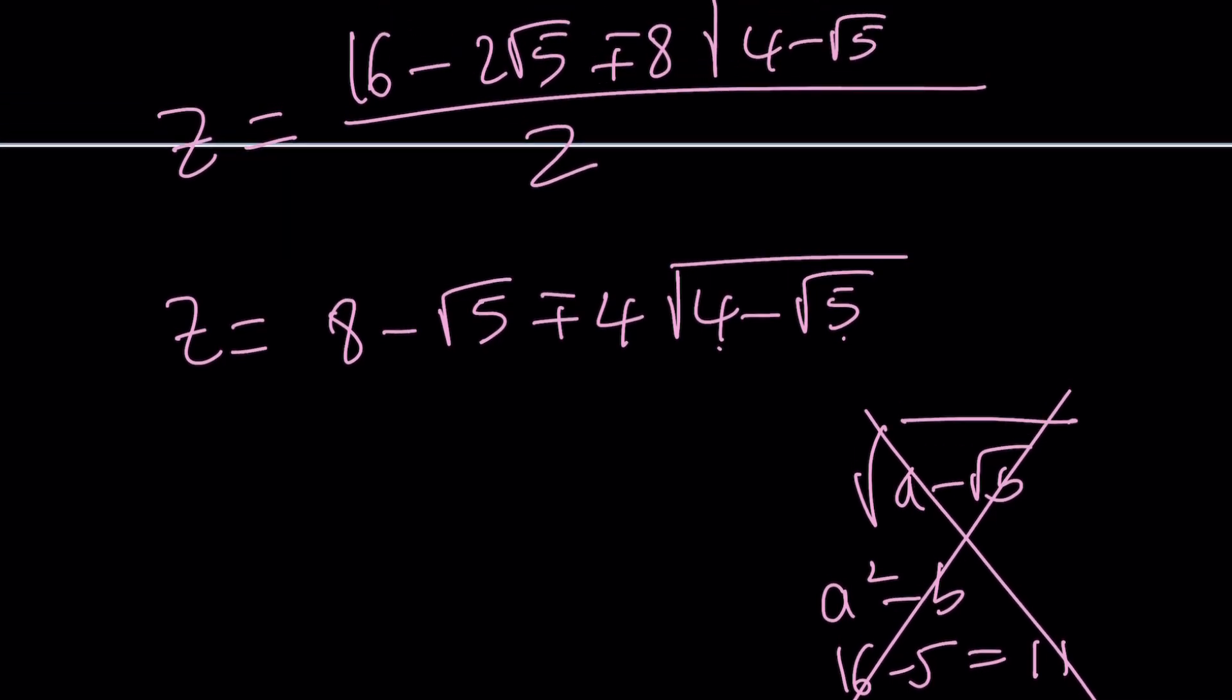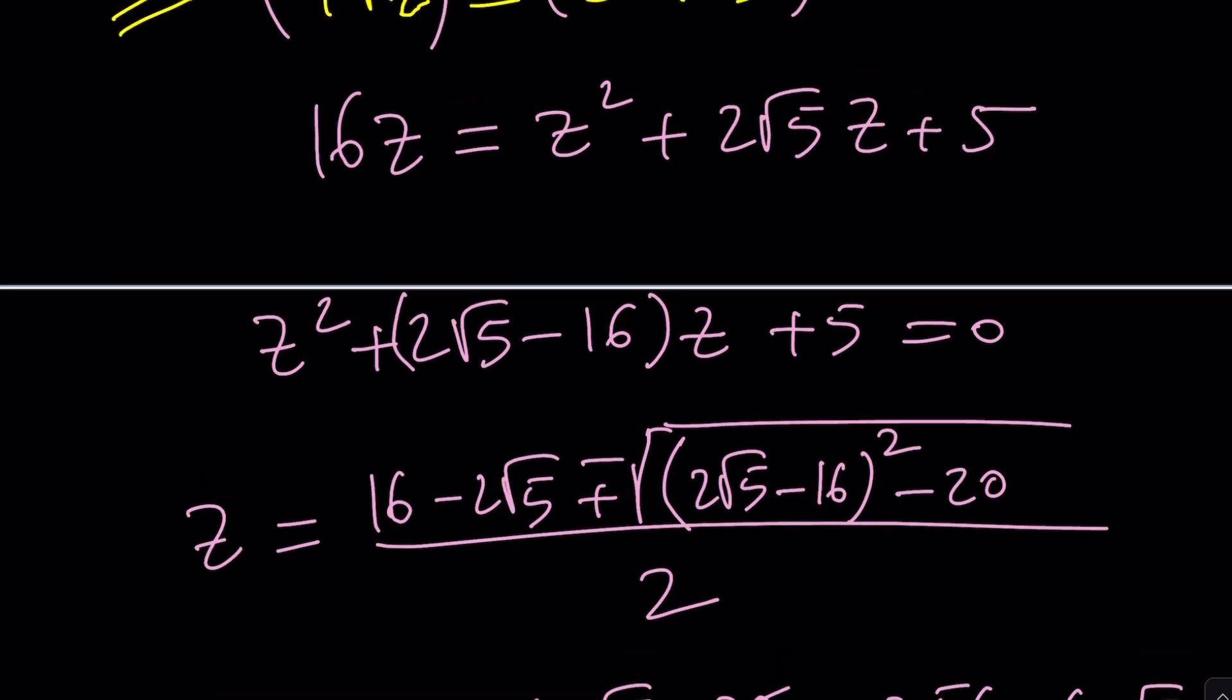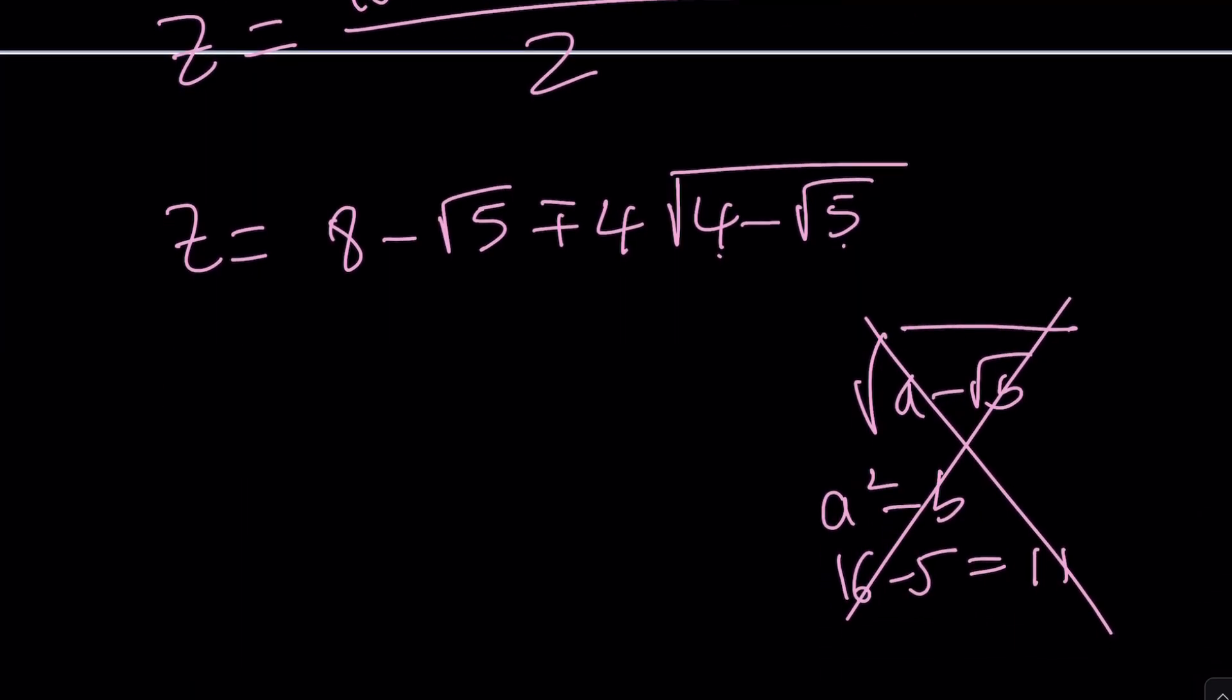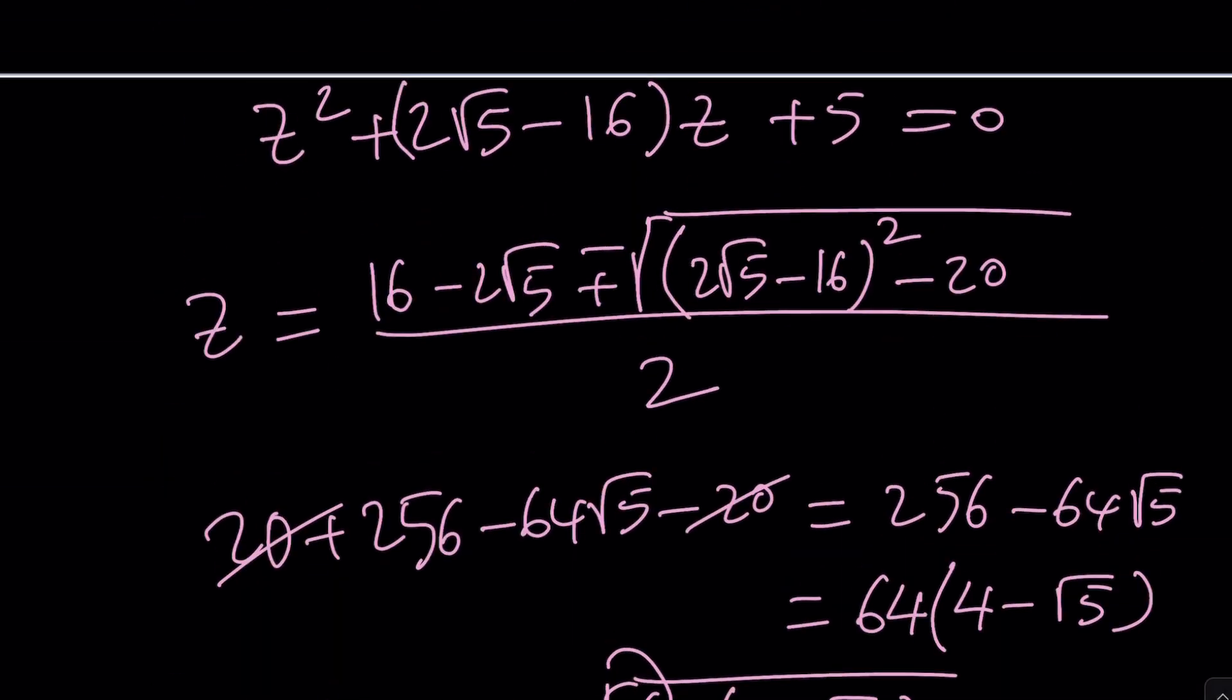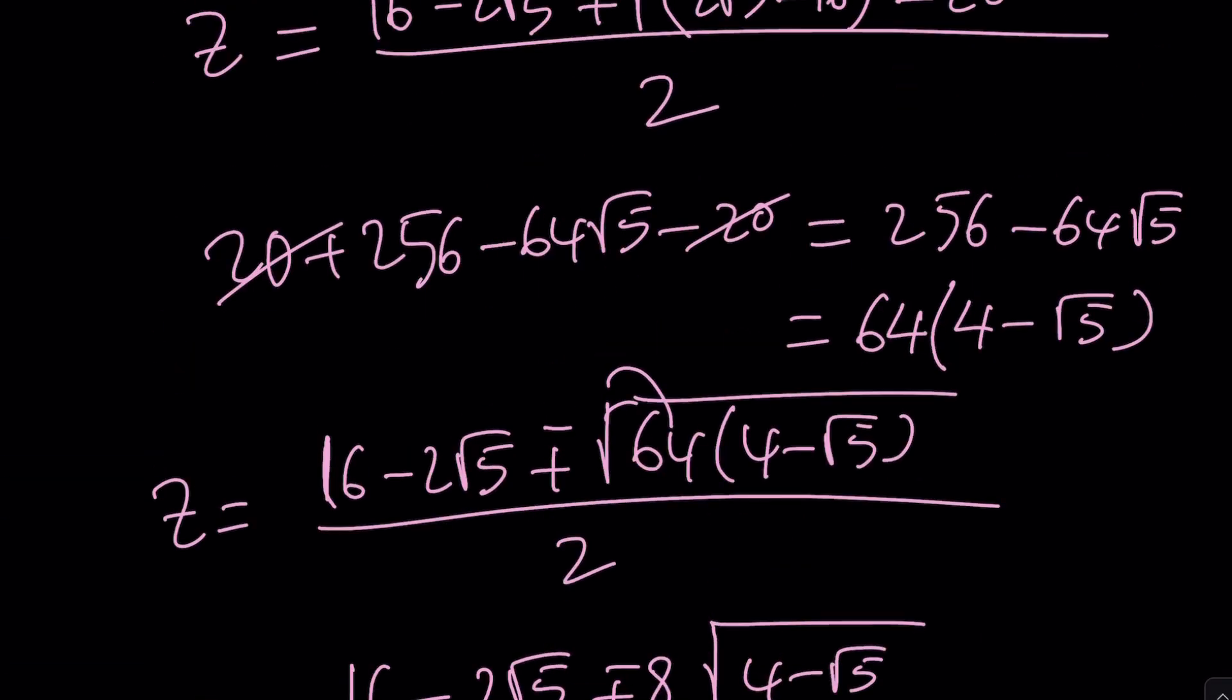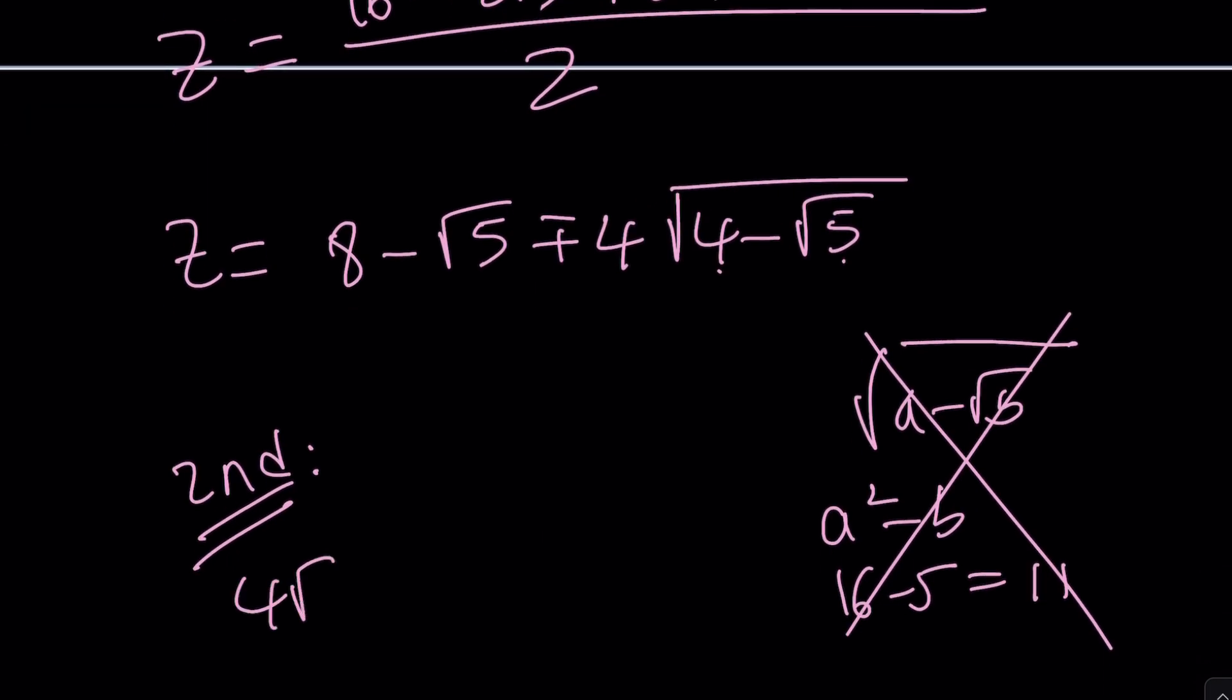So those are the z values. But wait a minute. Are there only two solutions? Well, looks like it, because this is a radical equation, maybe a quadratic in some way. Anyways, let's go ahead and take a look at the second method. And maybe we could possibly come up with a third method, but I already talked about it.